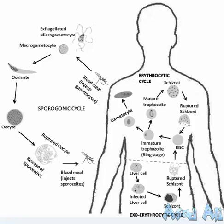The ruptured schizont releases many exoerythrocytic merozoites. These merozoites enter into RBCs and form a trophozoite. This is called the signet ring stage.